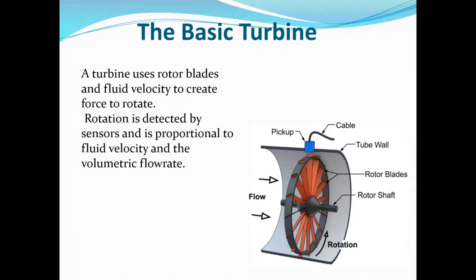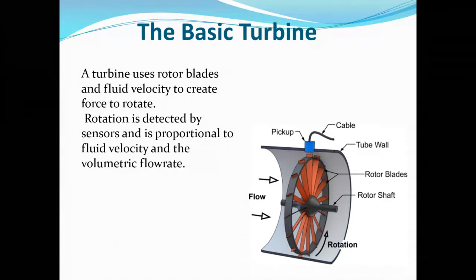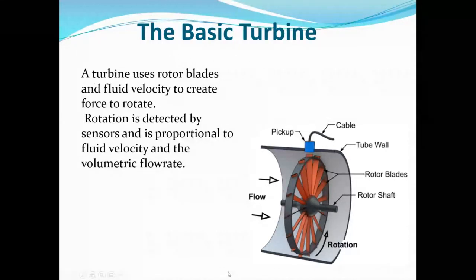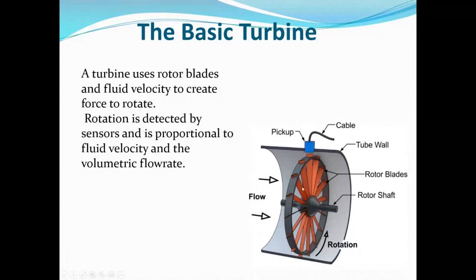Turbine meters vary in size from a relatively small half inch up to several inches and are pretty common in the oil and gas business. The basic turbine has a casing body with a turbine suspended in the flow path. As flow impinges on the pitched blades of the rotor, it causes them to turn. The blade motion is detected by a pickup which counts pulses proportional to the volumetric flow rate.